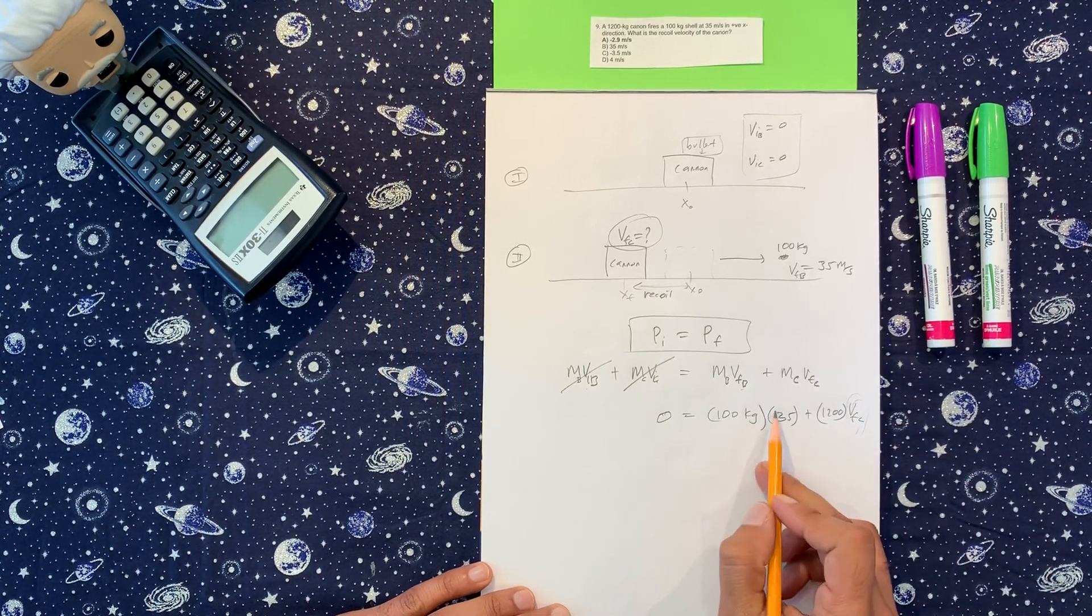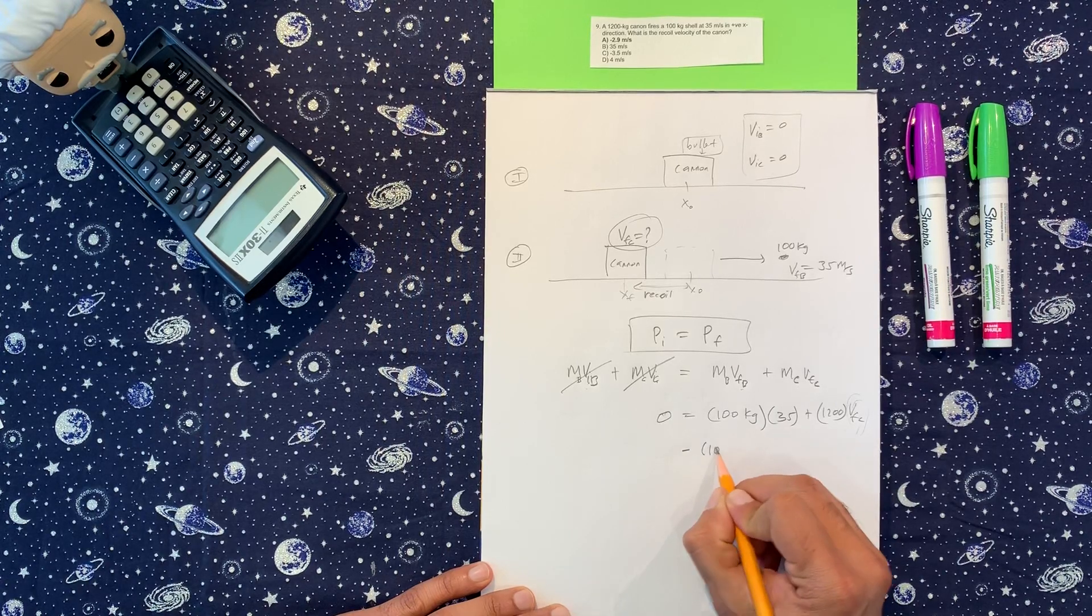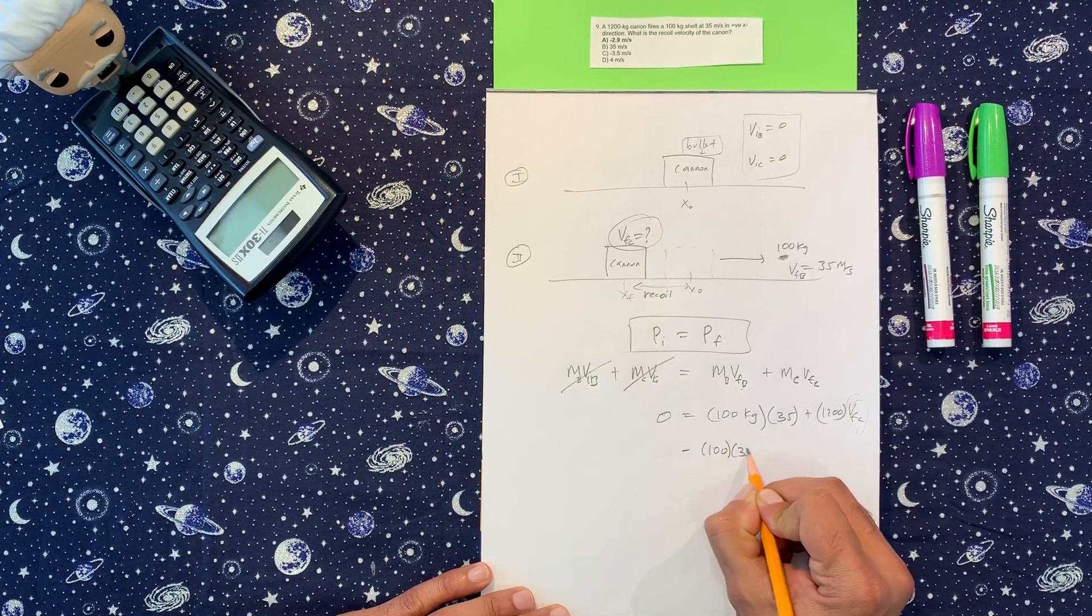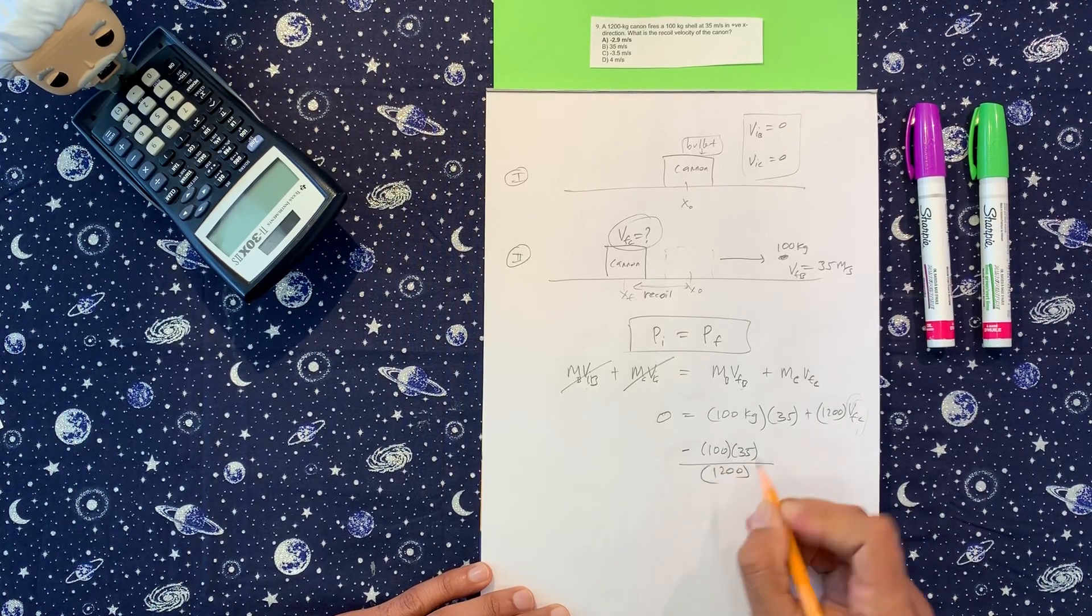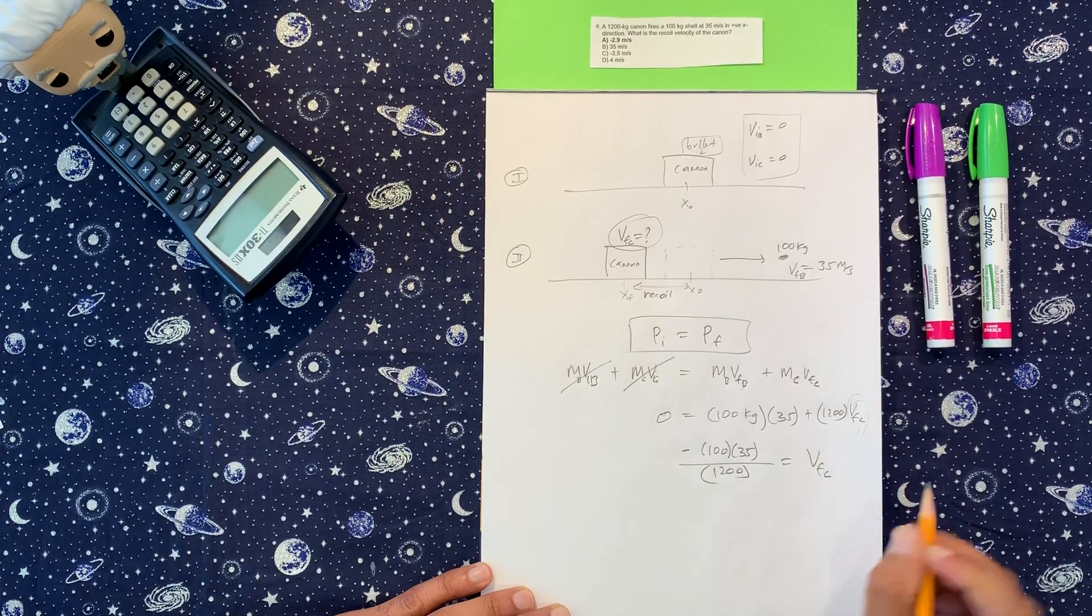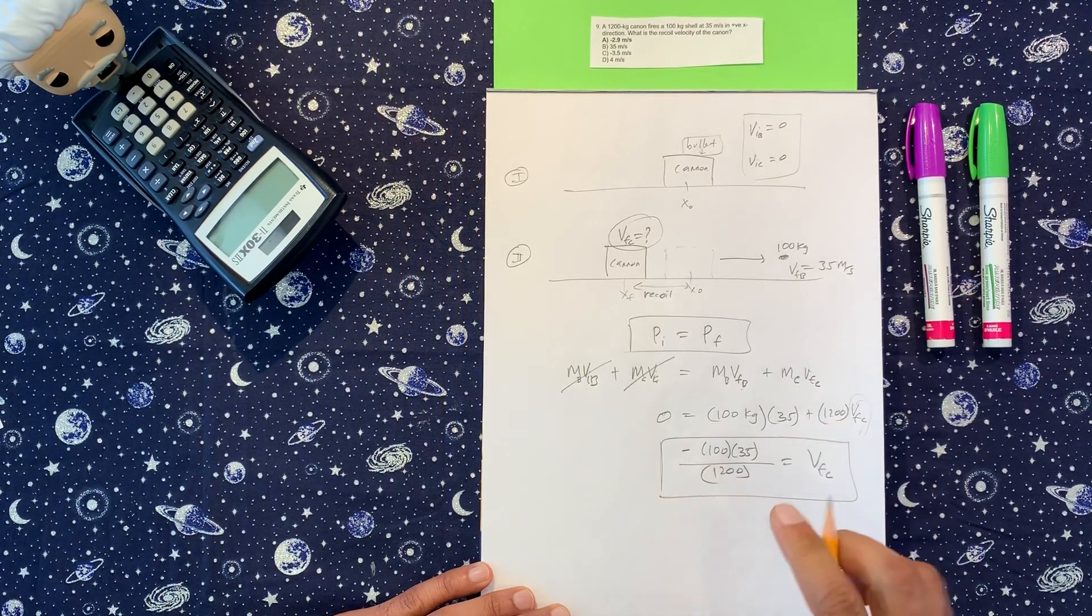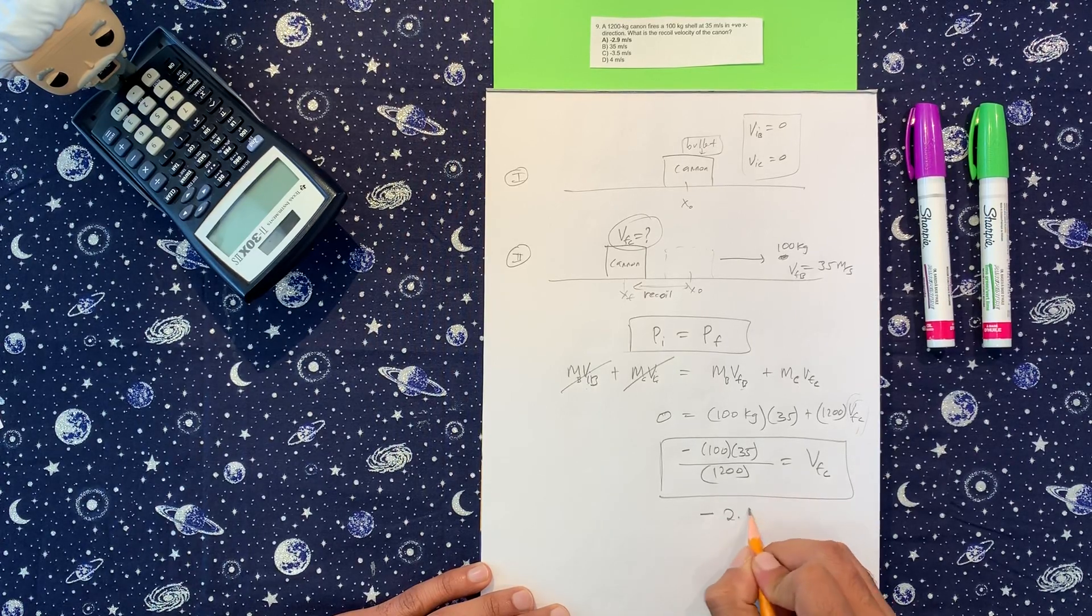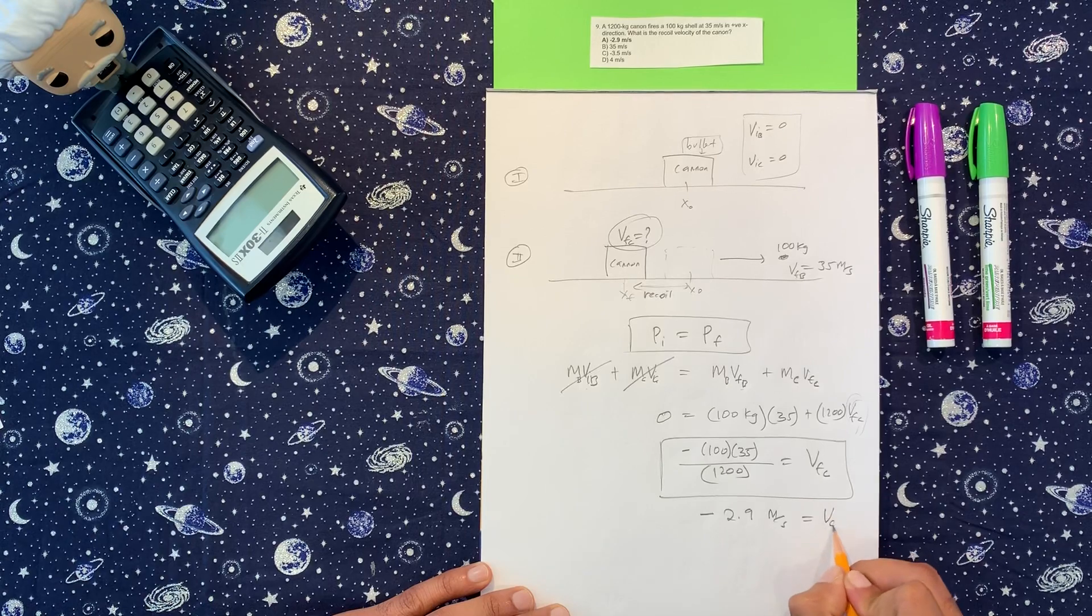All right, so putting these two on the other side, we're going to get negative 100 times 35, and then divide 1200 to separate it from the V final of the cannon, which is the recoil velocity. And calculator, negative 2.9 meters per second, is the recoil velocity.